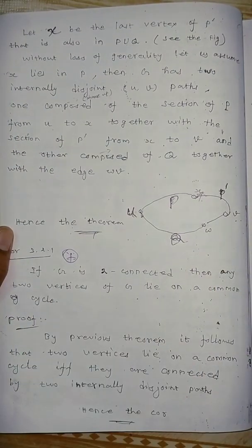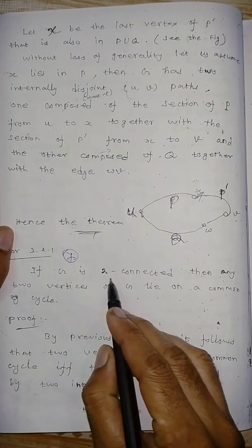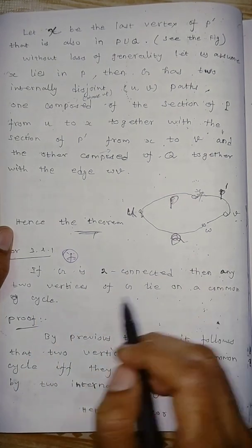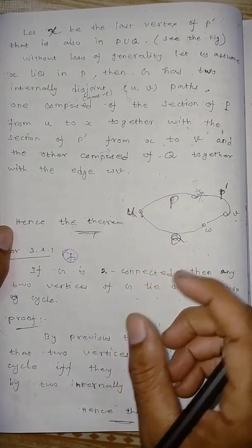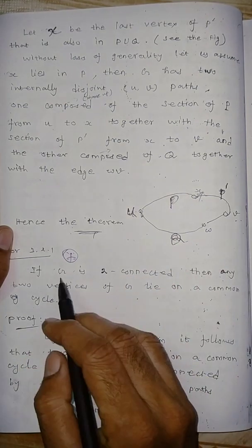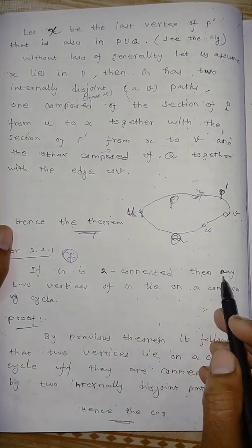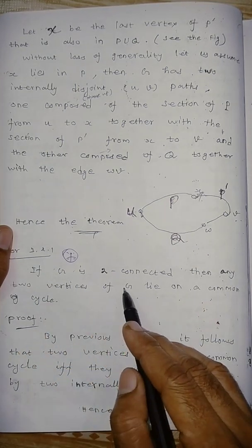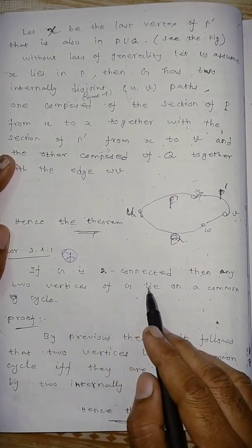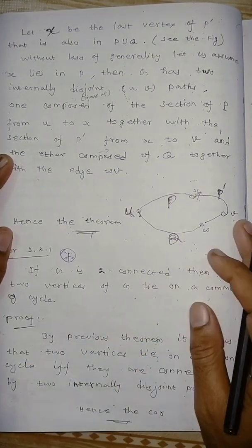Continuation — Corollary. If G is a 2-connected graph, then any two vertices of G lie on a common cycle.